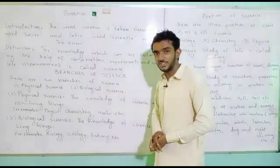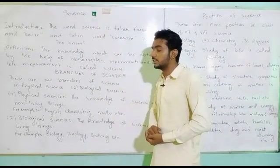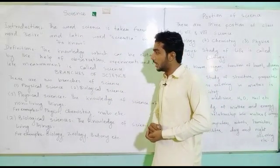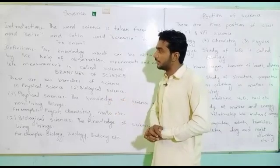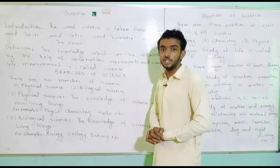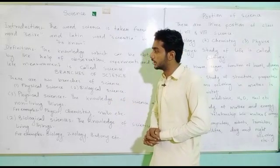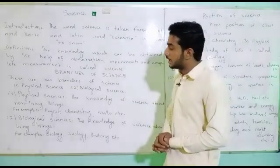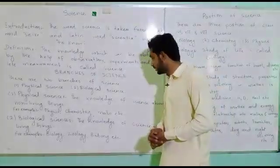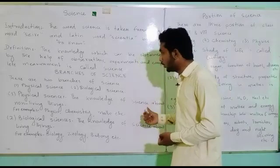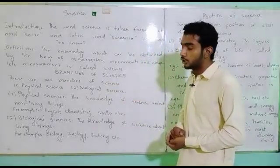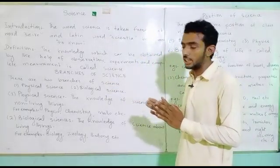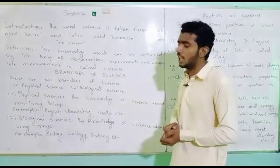There are two branches of science: number one, physical science, and number two, biological science. Physical science: the knowledge of science about non-living things. جو knowledge ہمیں non-living things کے بارے میں ملتی ہے اسے physical science کہتے ہیں۔